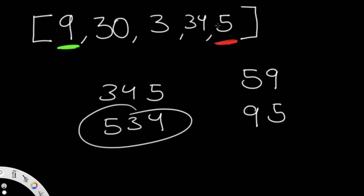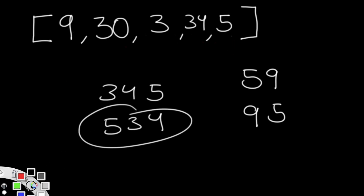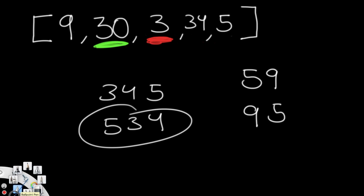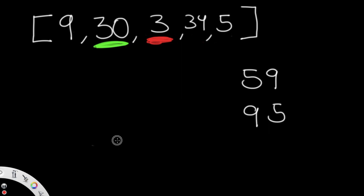That completes one full iteration. The result tells us 9 is definitively the first value. The green pointer now moves to the next position, and the red pointer is placed right after it. We then perform the same comparison steps for the remaining elements to determine the next digit in the largest number.